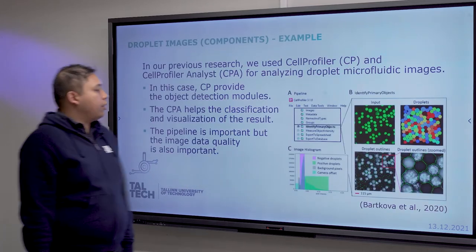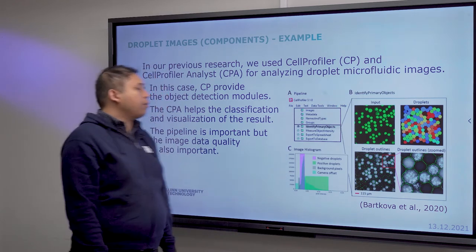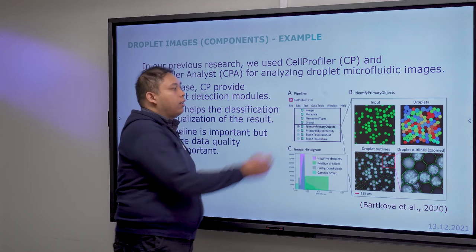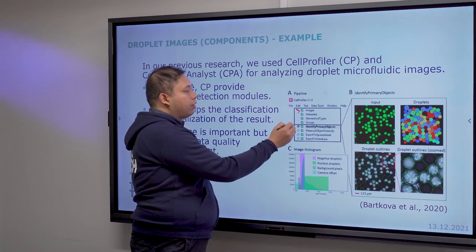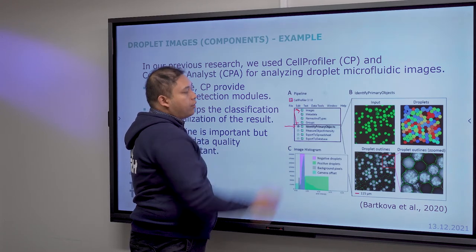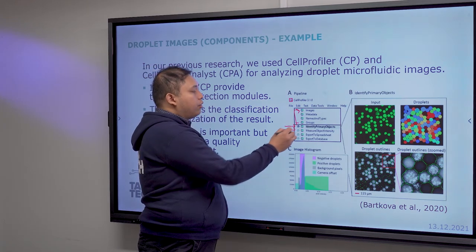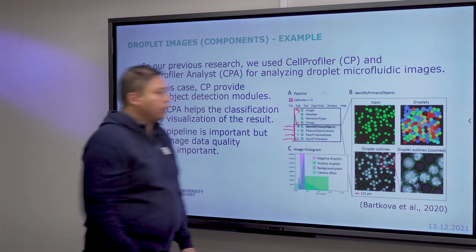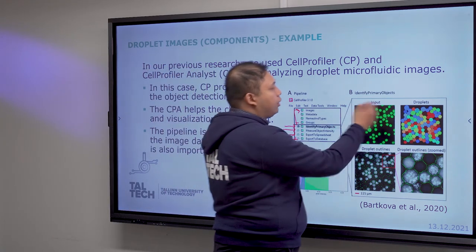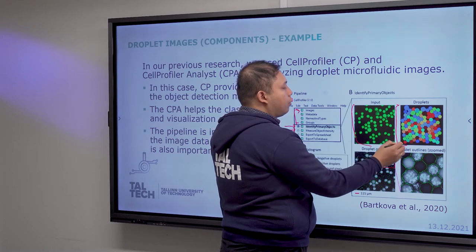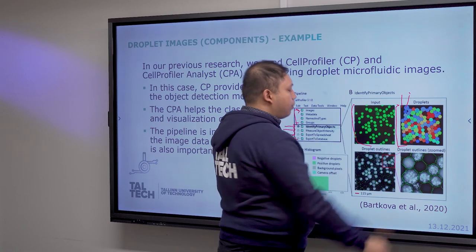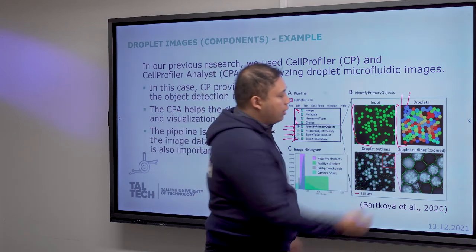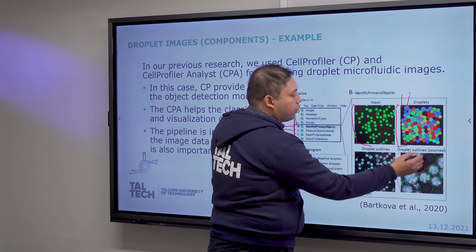In our recent work, we used CellProfiler and CellProfiler Analyst to detect and classify droplets. We constructed a pipeline using this software, added default modules plus 'Identify Primary Objects' and other measurement modules, then exported data to Excel and a database for classification. As output you can see the detected objects — the background and droplets — segmented in the image.